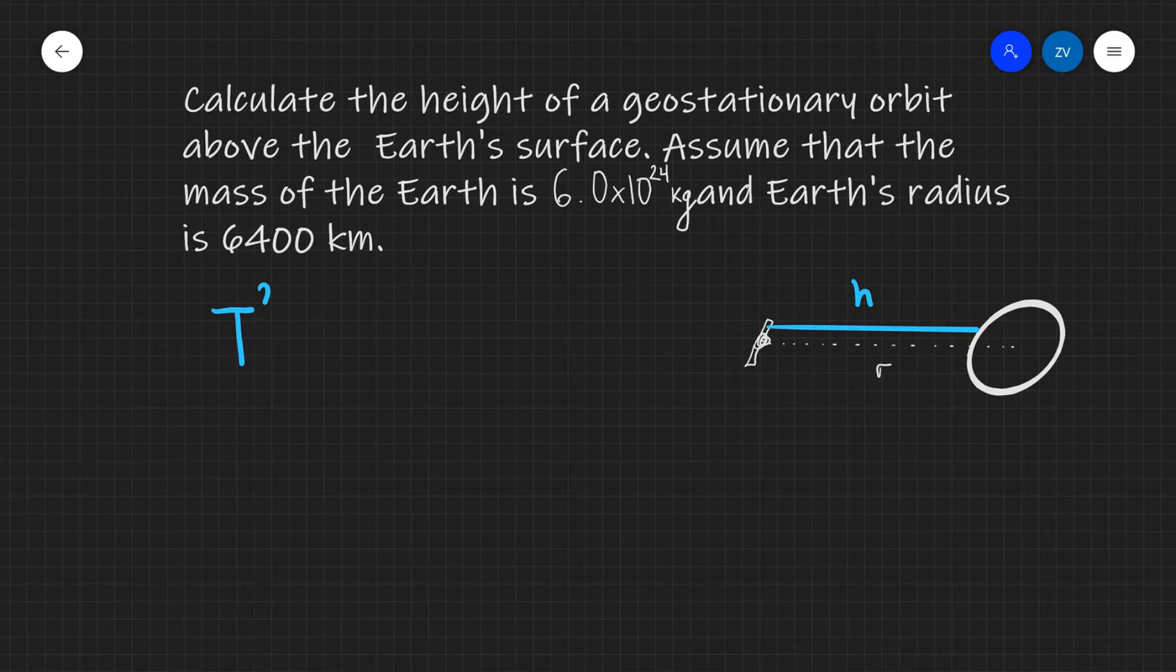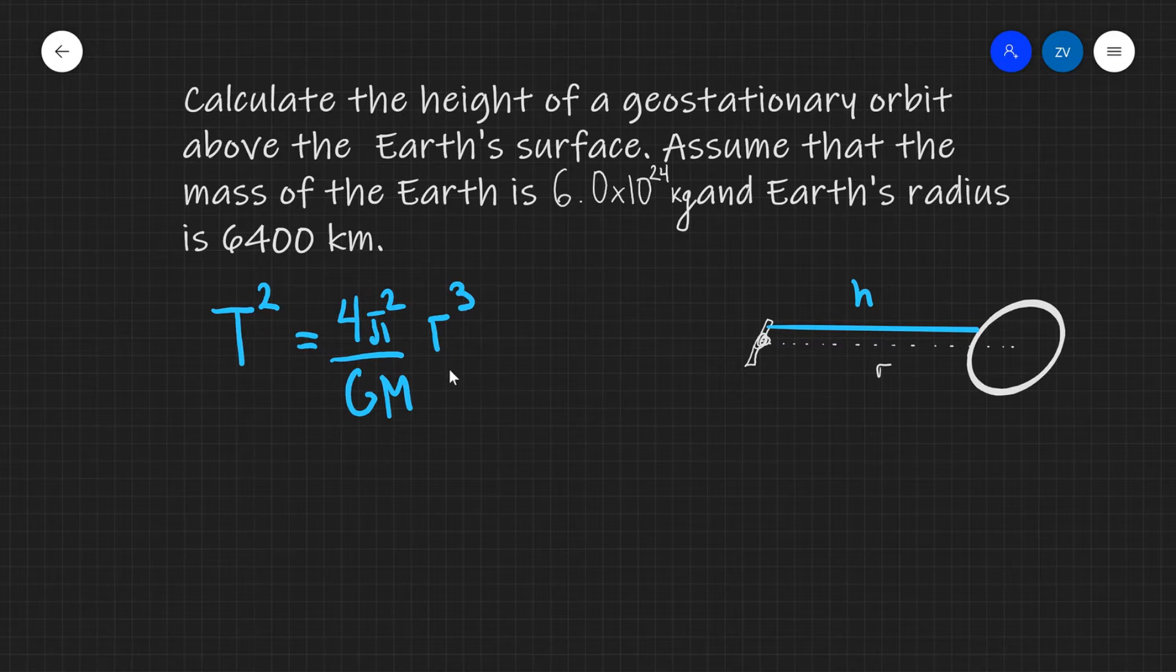The first thing we need to do is just simply write down Kepler's third law. So remember, Kepler's third law says that the square of the time period is proportional to the orbital distance. The constant proportionality in this case is 4π² divided by GM. In this case, m will be the mass of the Earth. G is the gravitational constant, r³ is the orbital distance, and T² is the orbital period.